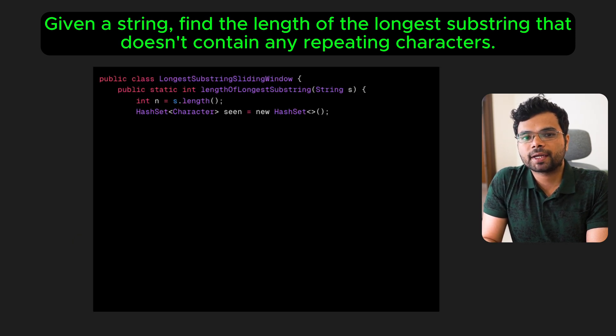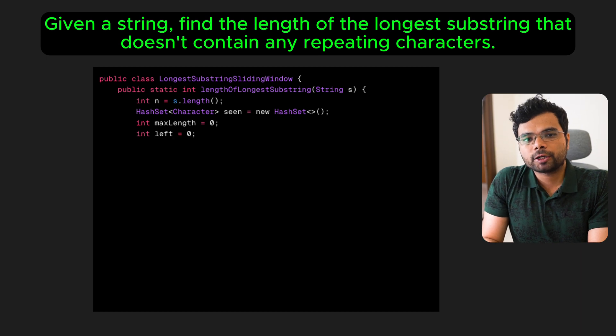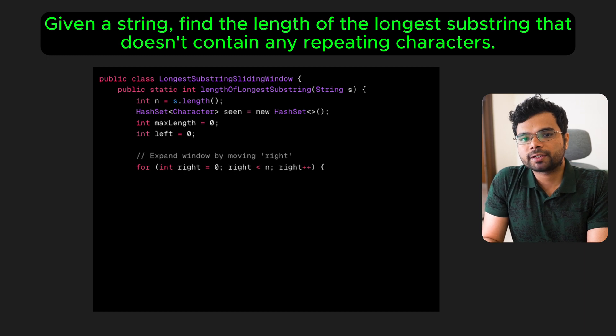Initialize a set to track unique characters in the current substring. Initialize maxLength to 0 to track the maximum length of substring without repeating characters. Initialize left pointer to 0, which represents the starting index of the current substring. Use the for loop with the right pointer across the string, expanding the window one character at a time.